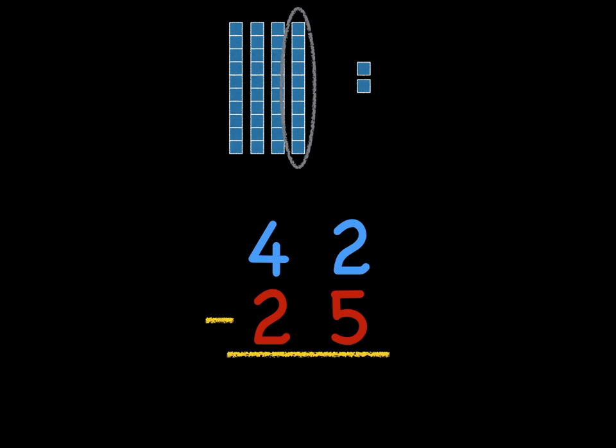We're going to turn this one group of tens into a group of ten ones. Then we're going to bring those ten ones over to our other ones. This is still the number 42, but we've just regrouped so that we can do our subtraction.